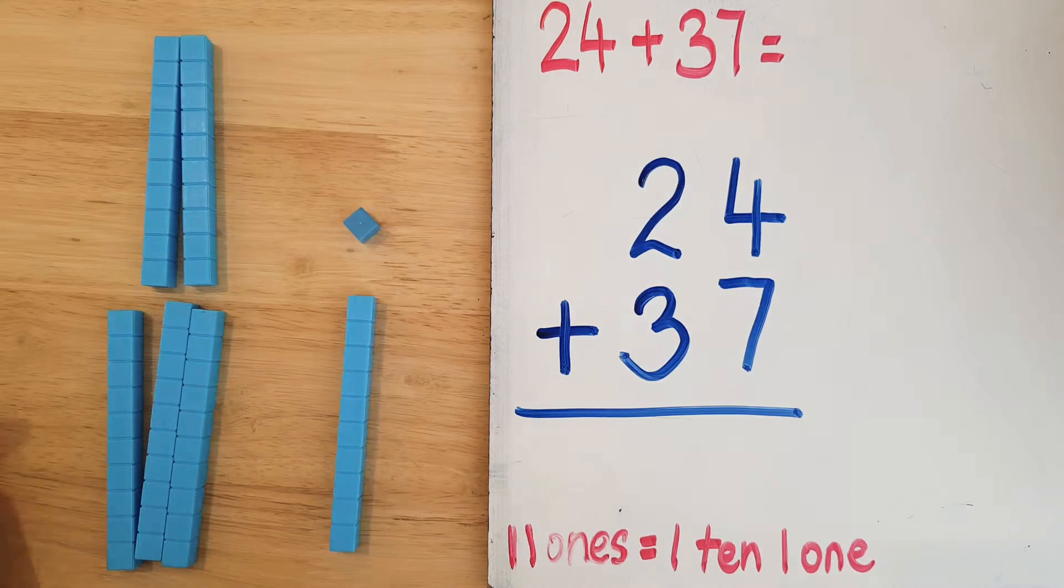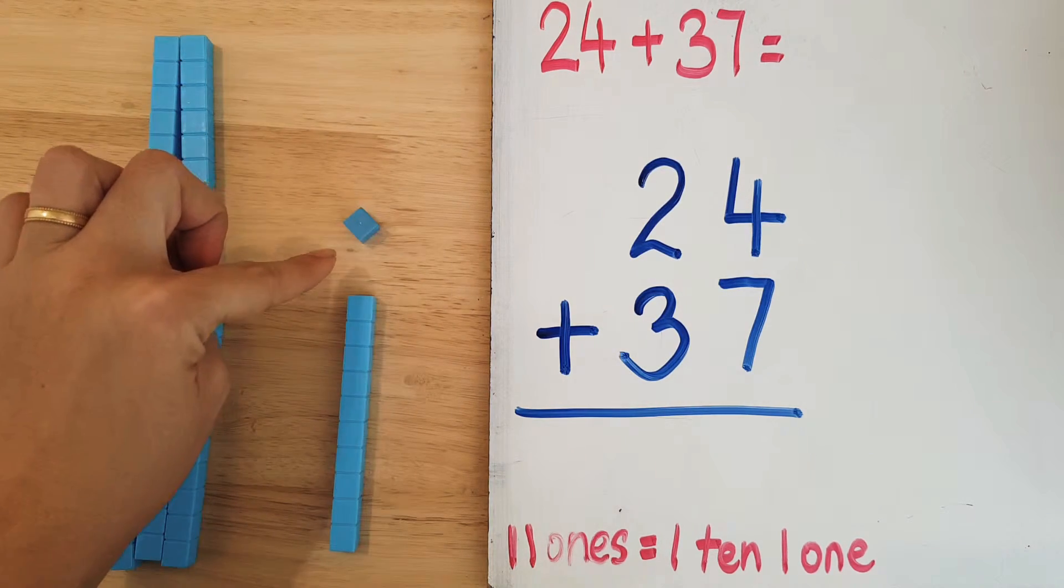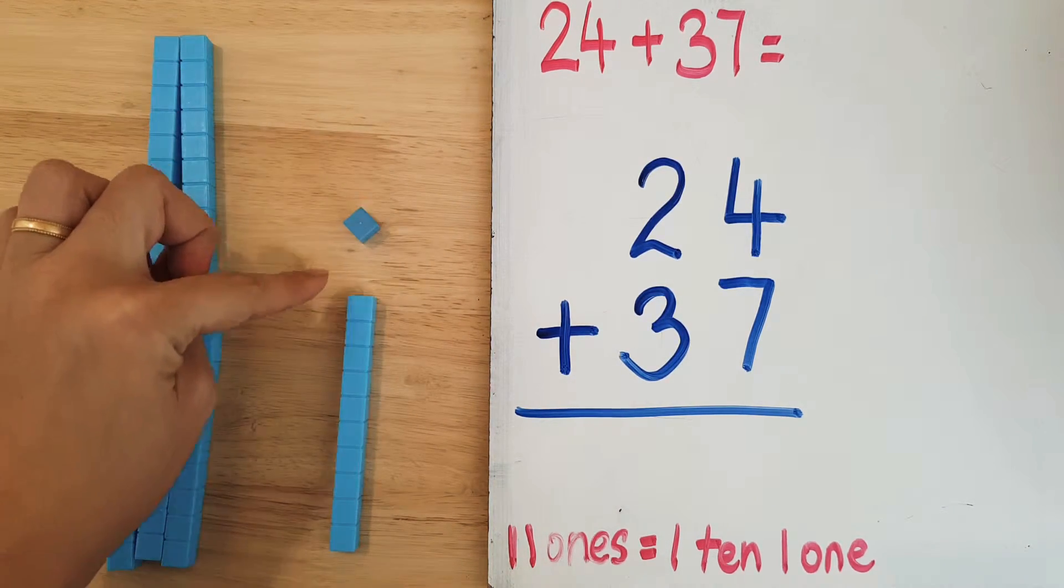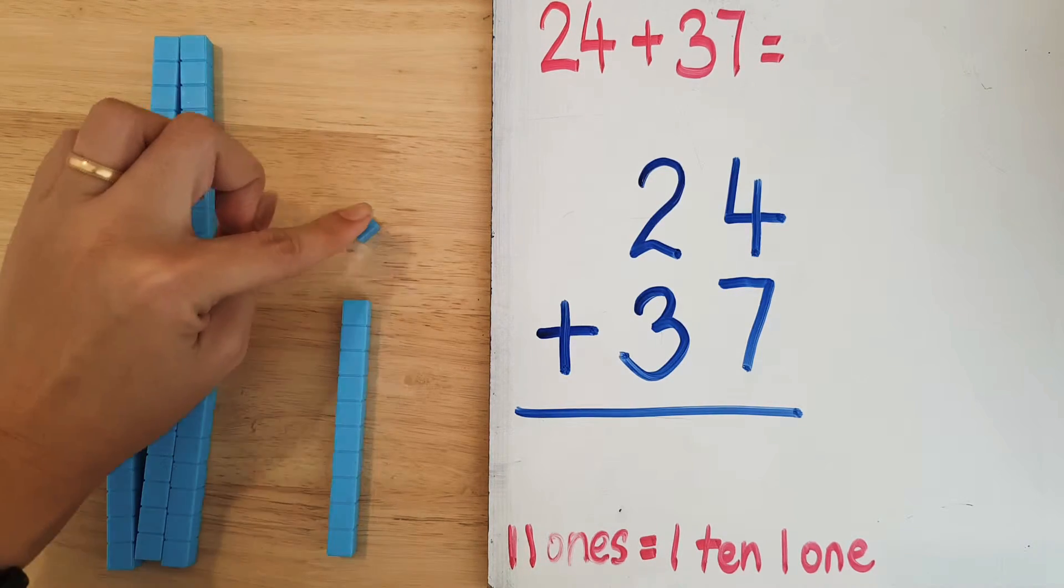Now I'm just giving it a different name. There's still 11 here, but instead of calling it 11 ones, I'm calling it one ten and one one.